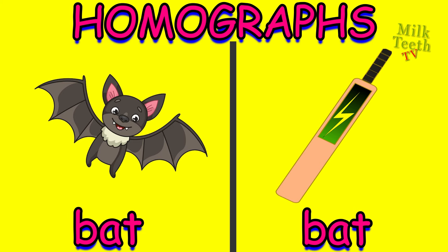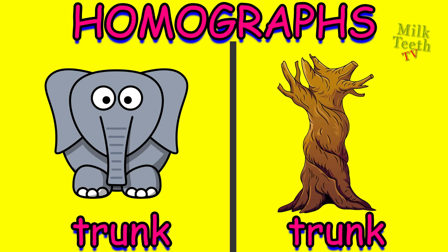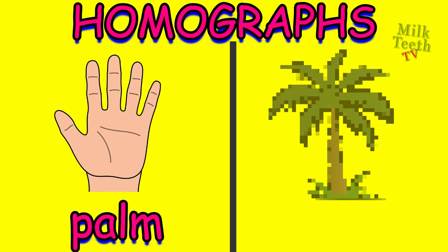Trunk — the nose of an elephant. And trunk — which is the tree trunk. Palm — the palm of our hand. And this is another palm — the palm tree.